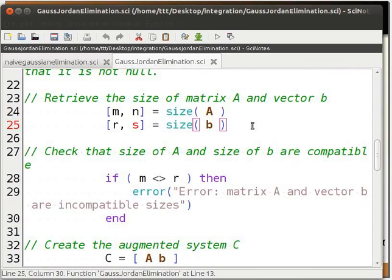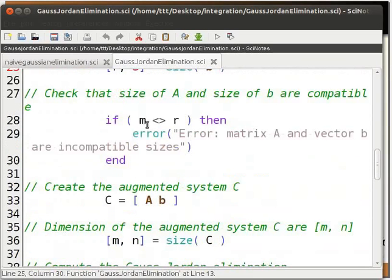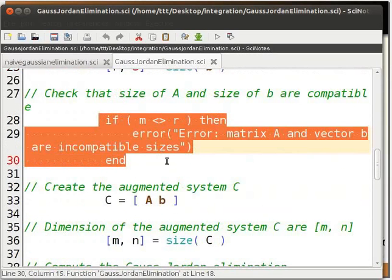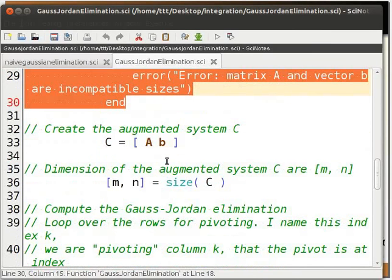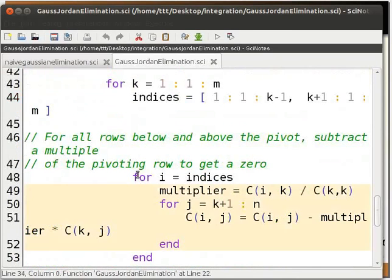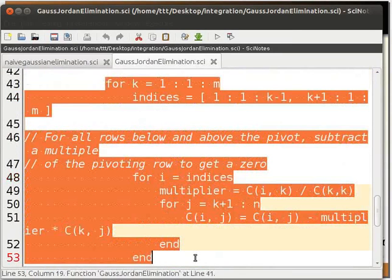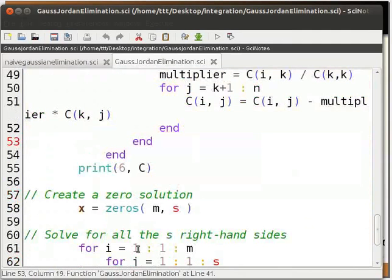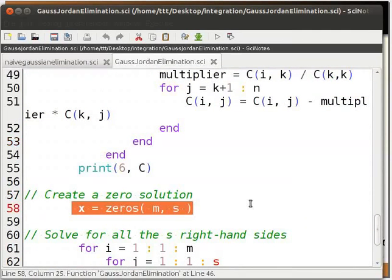If the sizes of A and B are not compatible, we display an error on the console using error function. Then we perform row operations to get diagonal form of the matrix. Here, pivot refers to the first non-zero element of a column. Then we create a matrix of zeros called X with M rows and S columns.